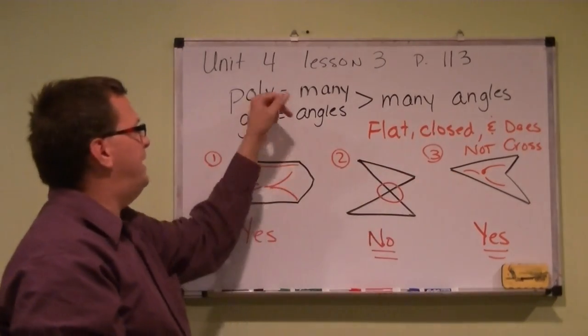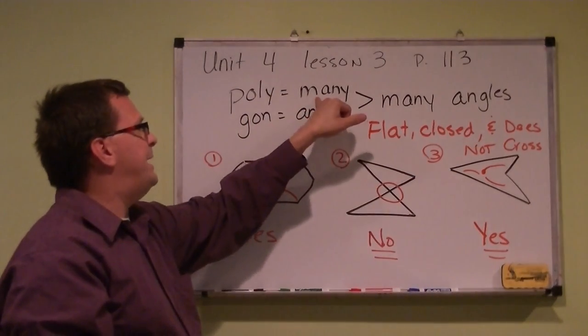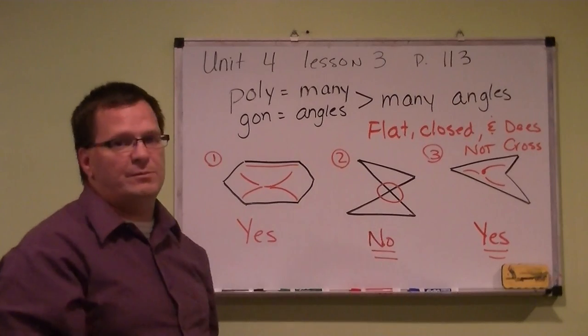It's flat, closed, and does not cross. And also, poly means many, and gon means angles. So many angles.